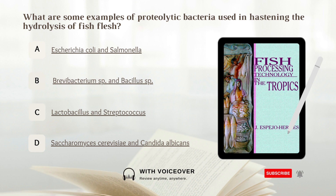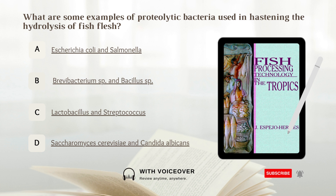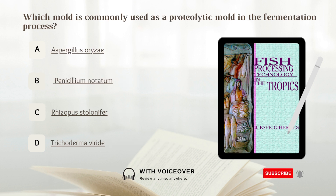What are some examples of proteolytic bacteria used in hastening the hydrolysis of fish flesh? A. Escherichia coli and Salmonella. B. Brevibacterium species and Bacillus species. C. Lactobacillus and Streptococcus. D. Saccharomyces cerevisiae and Candida albicans. Answer: B. Brevibacterium species and Bacillus species.